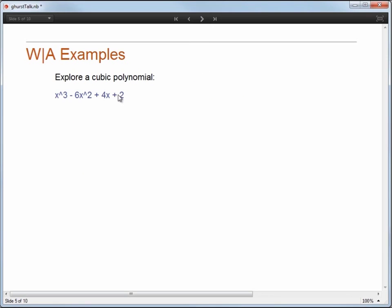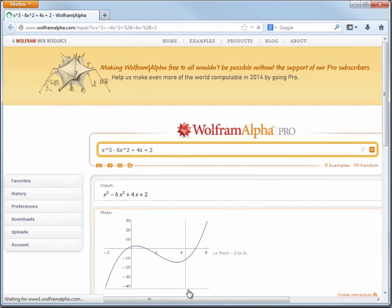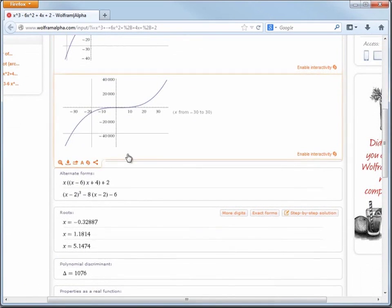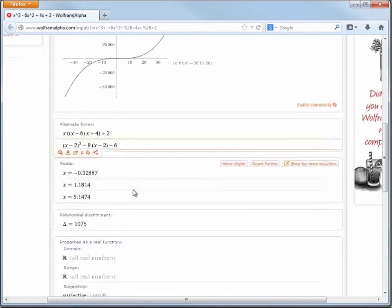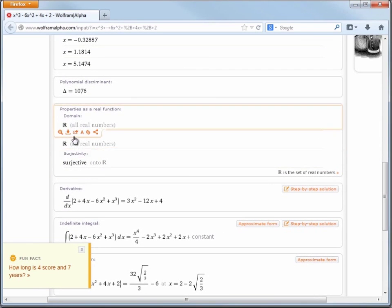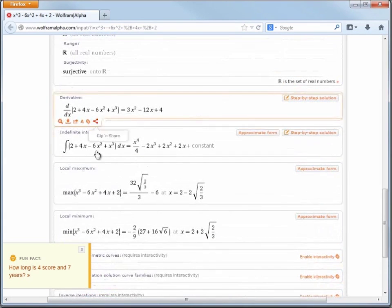How about another example? Let's take a look at this cubic polynomial. So WolframAlpha will automatically generate a report about this polynomial, but seemingly anything we would want to know about it. So we have plots, alternate forms, roots, properties such as domain range, this is a surjective function, max and min, and some more stuff.